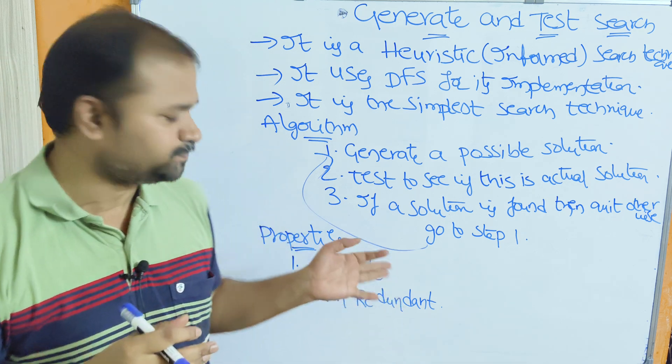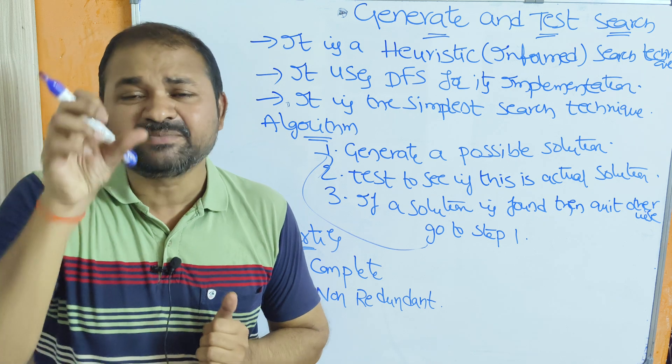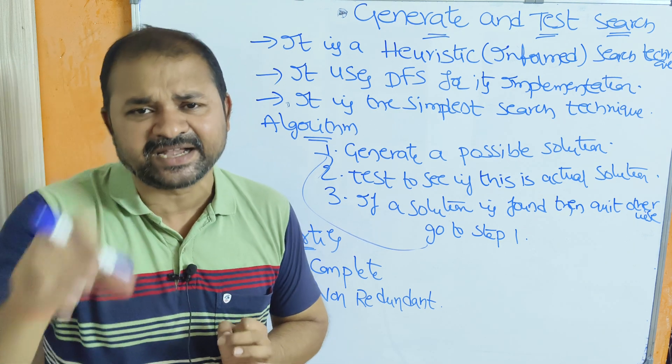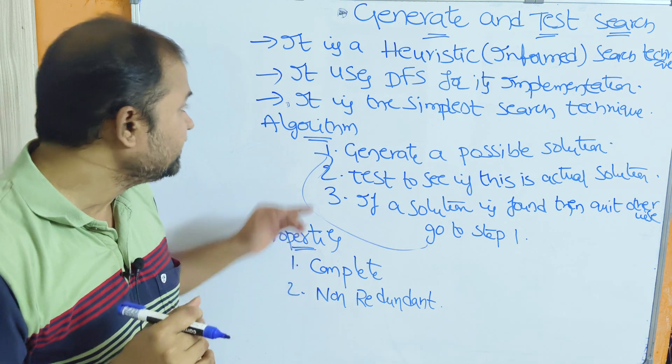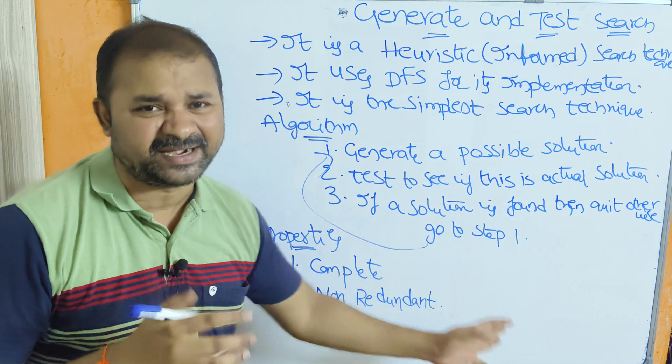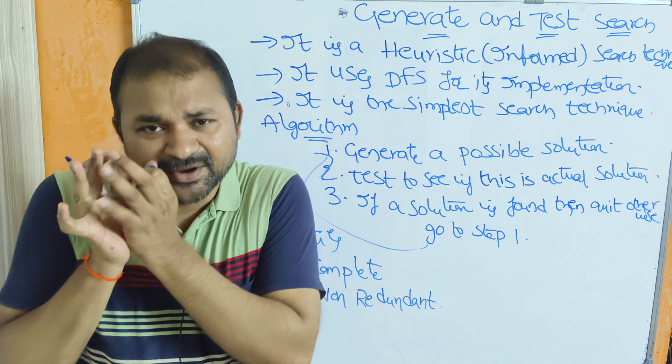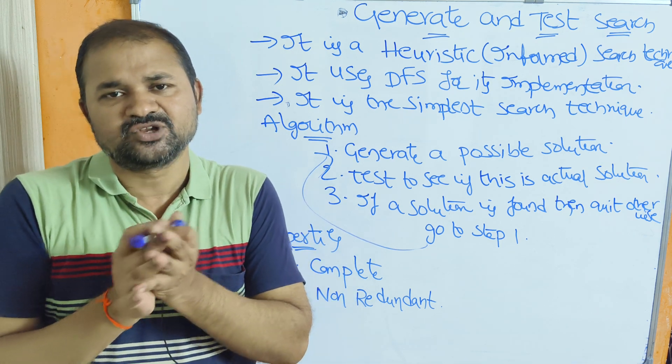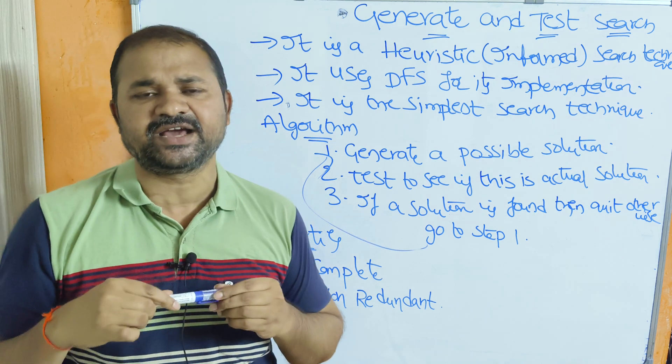That is why, if your solution is already generated, then the same solution will not be generated in the future steps. So we can say that here the generator is non-redundant. That means here the solutions must be non-duplicated. This is about generate and test search algorithm.